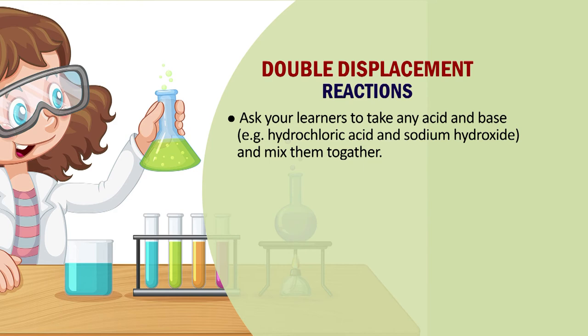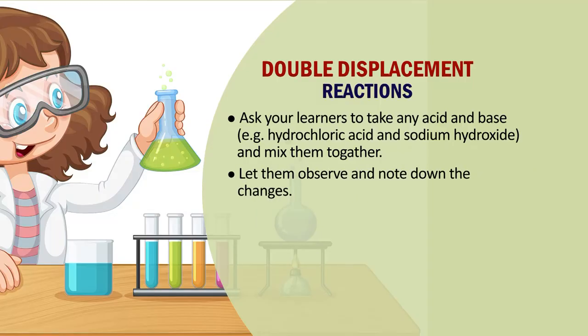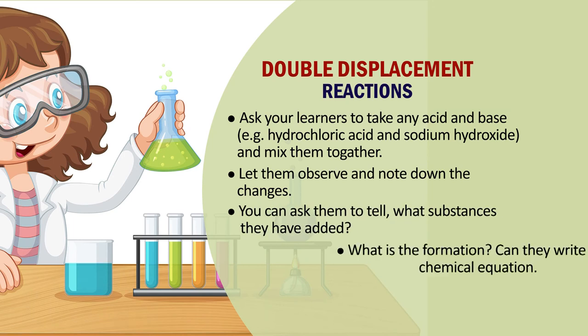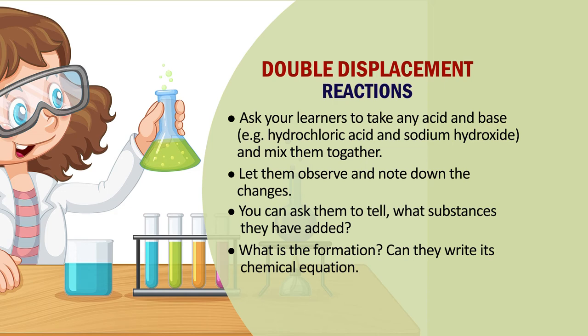But you may find chemical combinations where double displacement takes place — such reactions are called double displacement reactions. You can explain these easily by giving the example of acids and bases. Give them sodium hydroxide and hydrochloric acid and let them mix. When they mix, they will see a precipitate at the bottom of the conical flask or test tube. Let them observe that mixing one acid with one base gives one salt at the bottom and some liquid. Ask them to note down the changes, what substances they added, what was formed, and can they write its chemical equation.